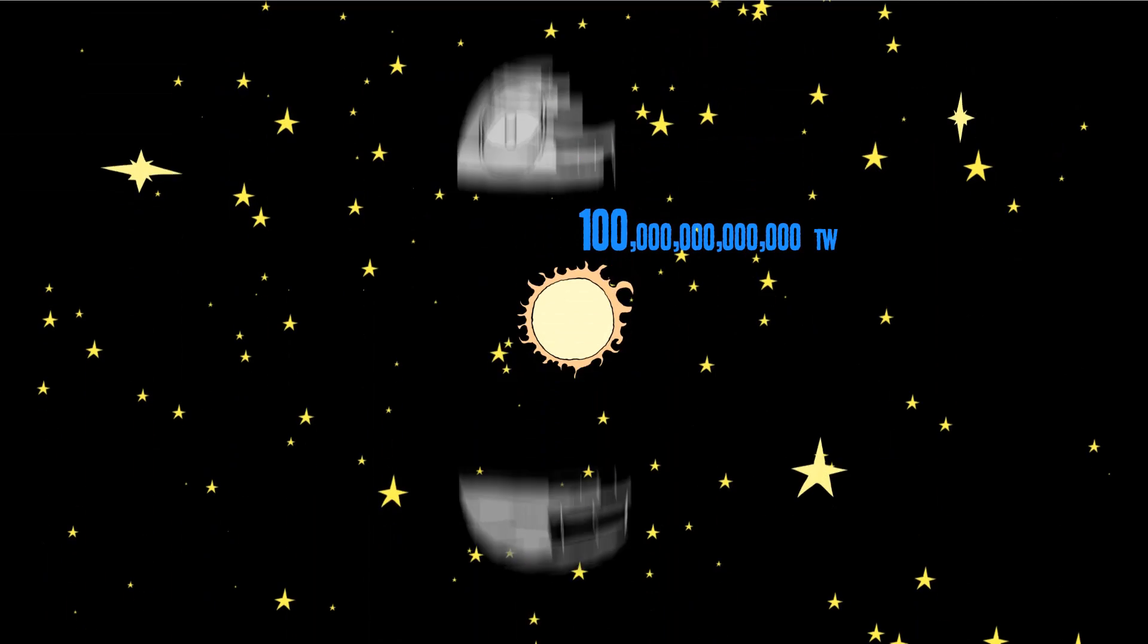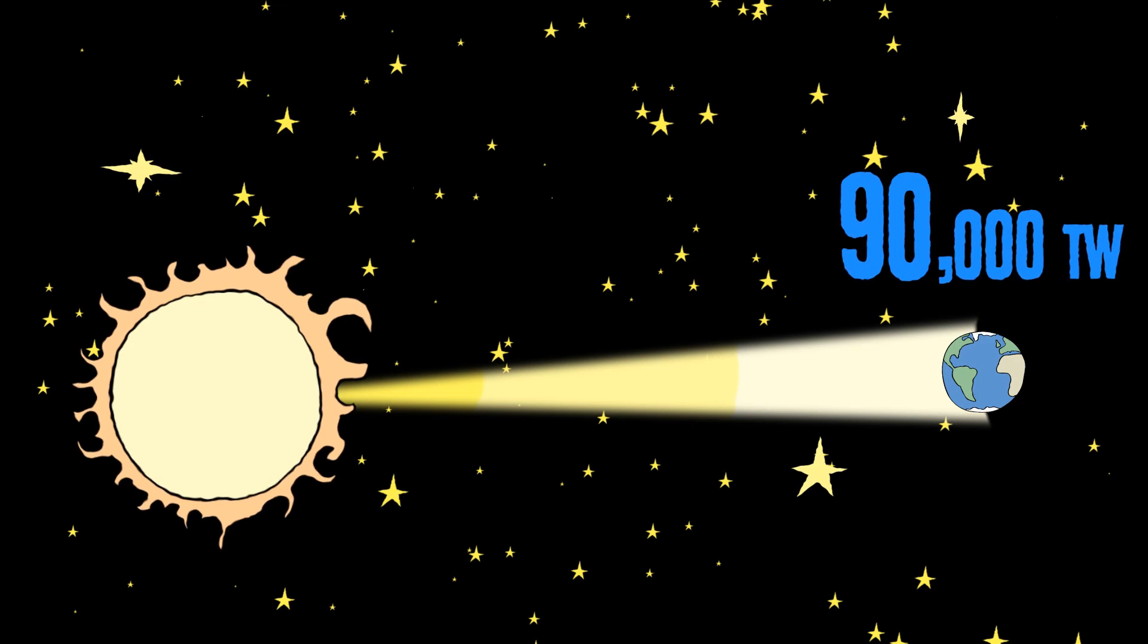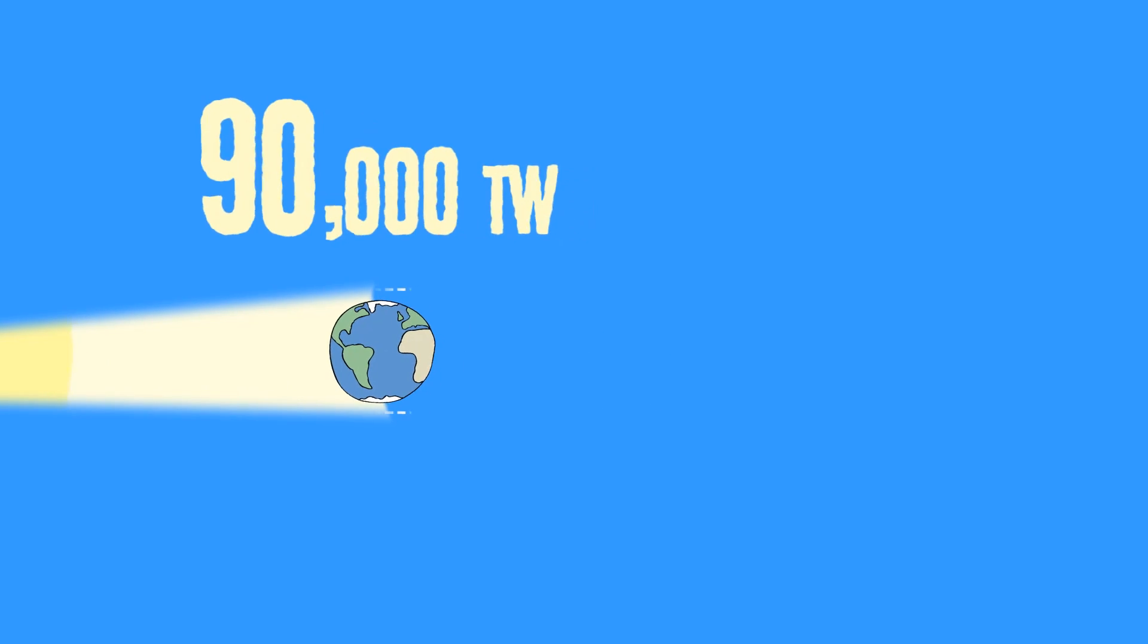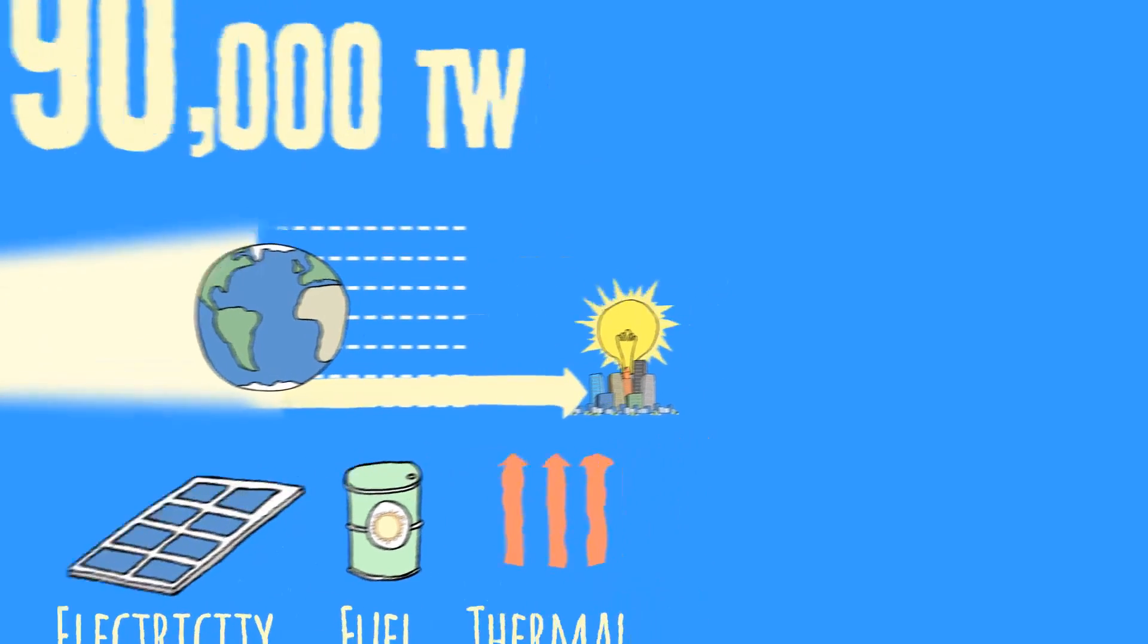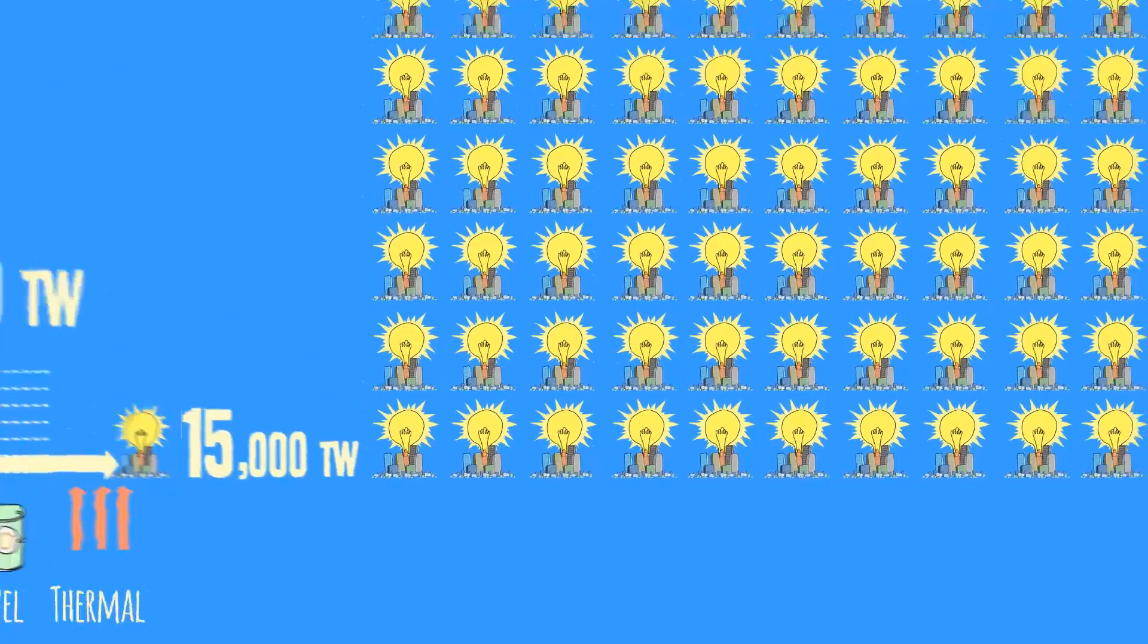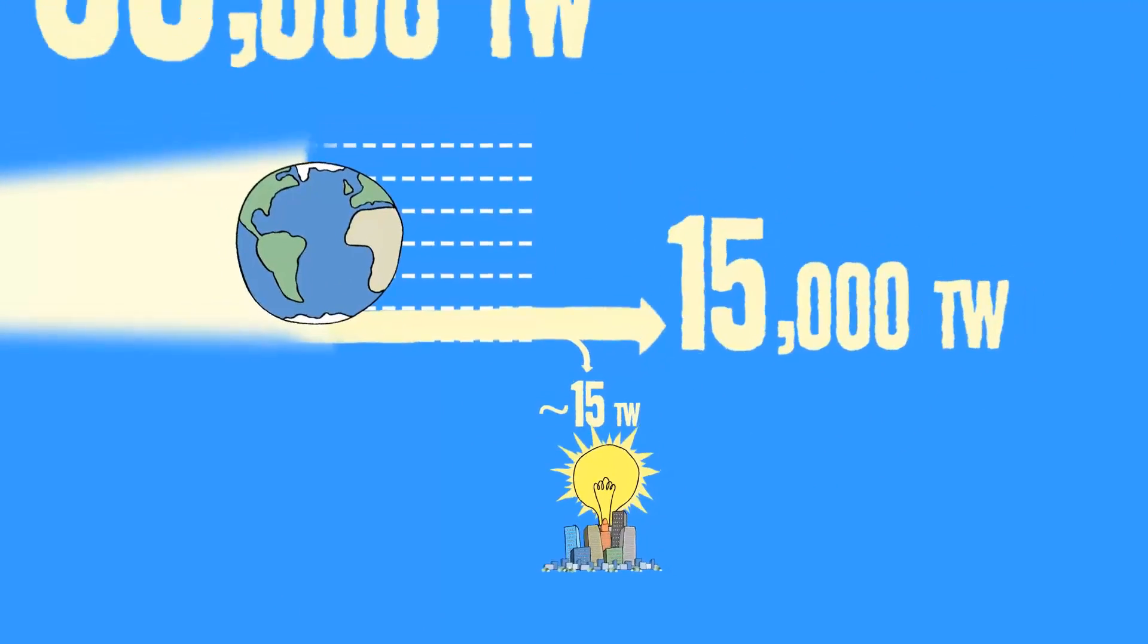So more realistically, of that 100 trillion terawatts, only about 90,000 make it to Earth's surface. And with our currently available technology, if we really, really wanted to, we could only capture about one-sixth of that. But one-sixth of 90,000 is 15,000 terawatts. That's enough to power a thousand current human civilizations, or just power the one we have well into the future using a tiny fraction of what the sun provides.